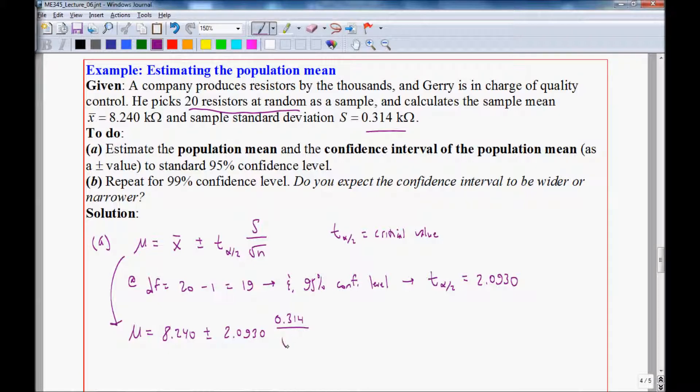divided by square root of N. N is 20. Be careful you don't use 19, we use 20, which is N here. And that gives us mu equal 8.240, plus or minus 0.147 units or kiloohms. And that's our answer.